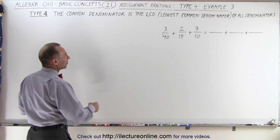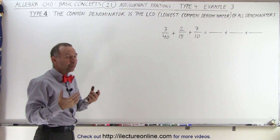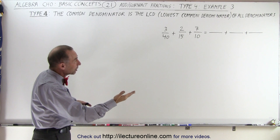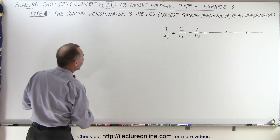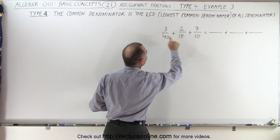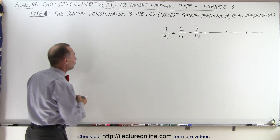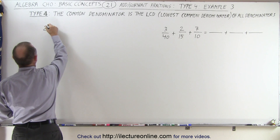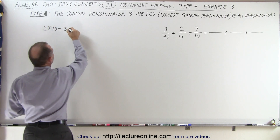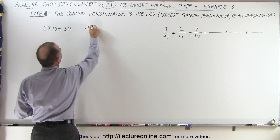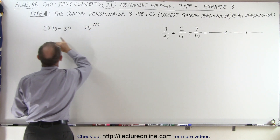The first method is to take the largest denominator and find multiples of it until we find one where the other two denominators fit evenly into. Starting with 40, you can see that 10 fits evenly into 40, but 15 does not. So now we try 2 times 40, which gives us 80. Does 15 fit into 80 evenly? The answer is no, so we move on to the next one.